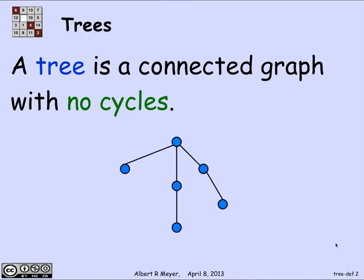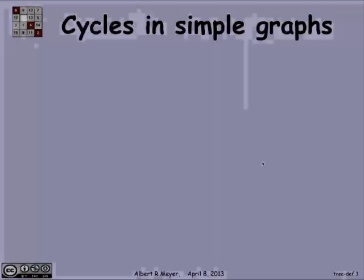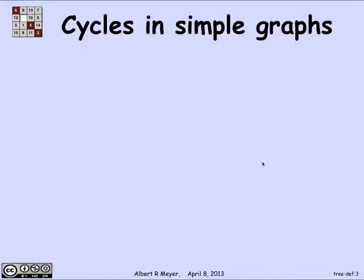In order to make sense out of that we better have a definition of a cycle. There's a picture of a typical tree, but to be precise what's a cycle in a simple graph?